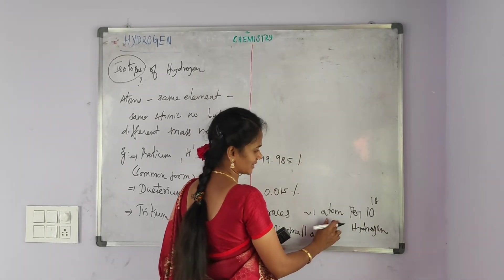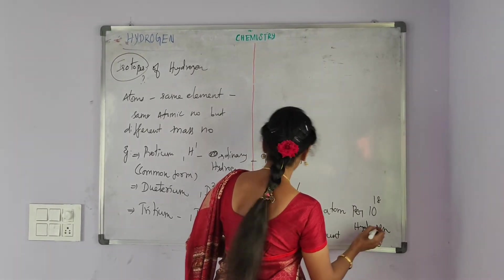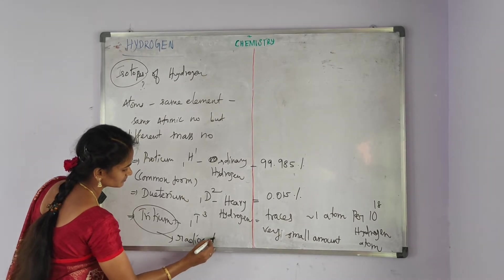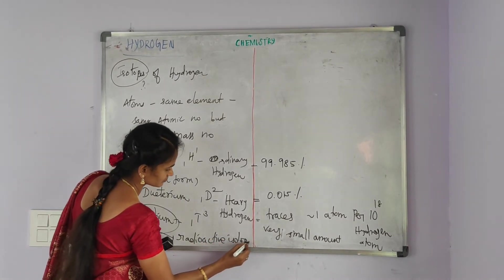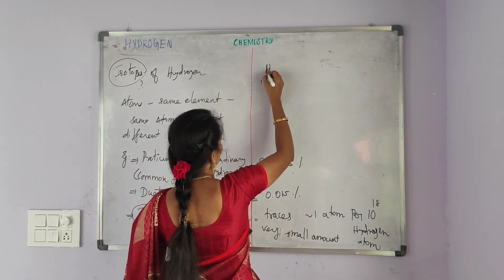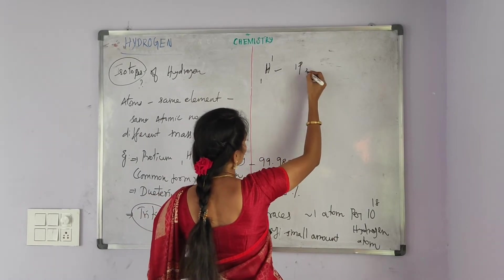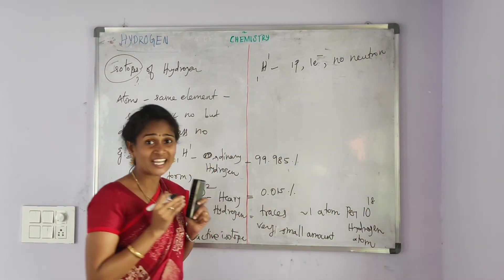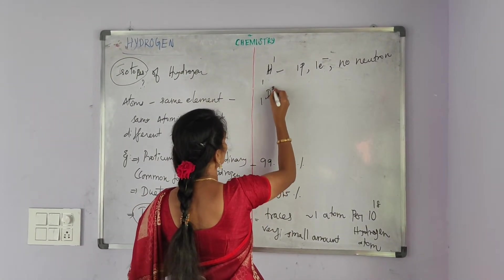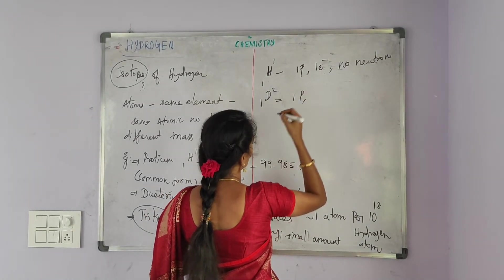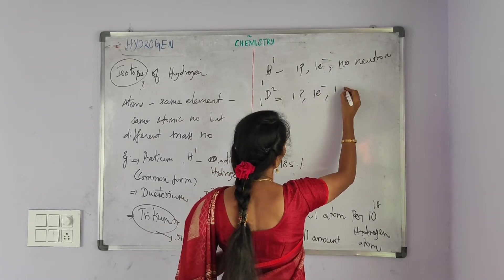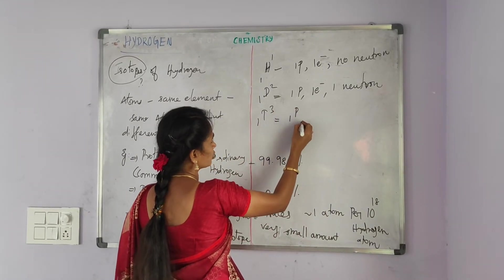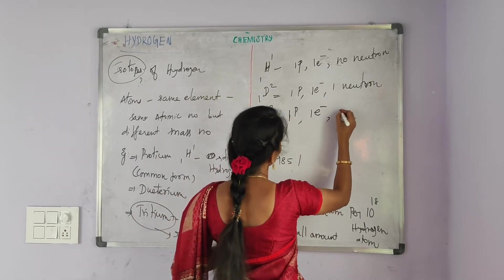Among the three isotopes, tritium is the radioactive isotope. Protium (¹H¹) contains one proton, one electron, and no neutrons — it is the only isotope with no neutrons. Deuterium contains one proton, one electron, and one neutron. Tritium contains one proton, one electron, and two neutrons.